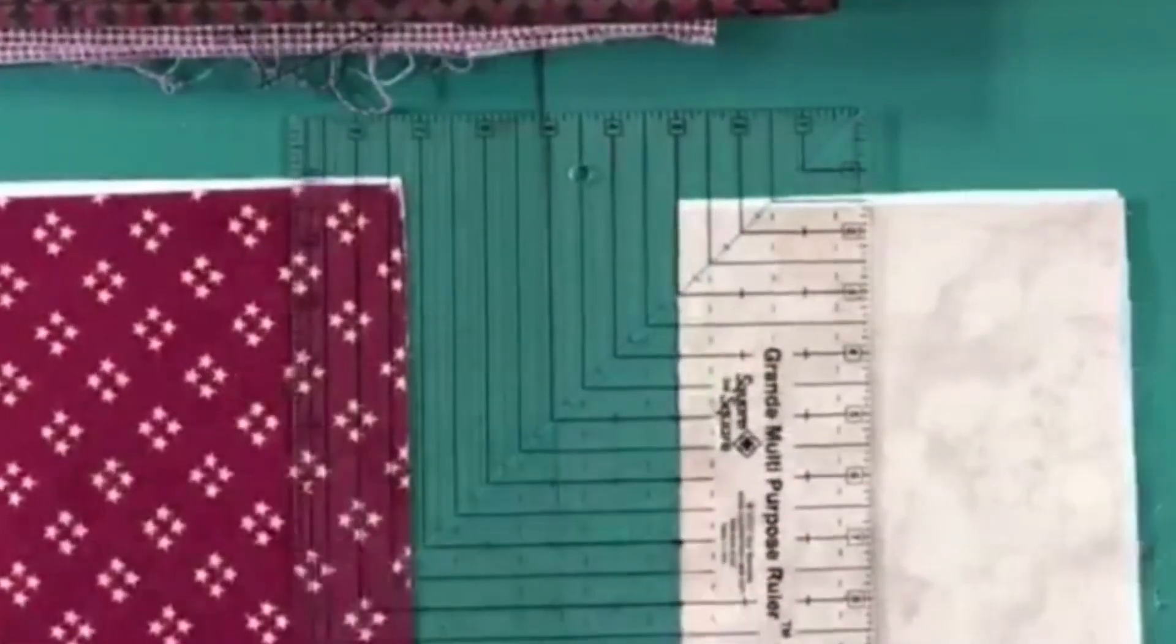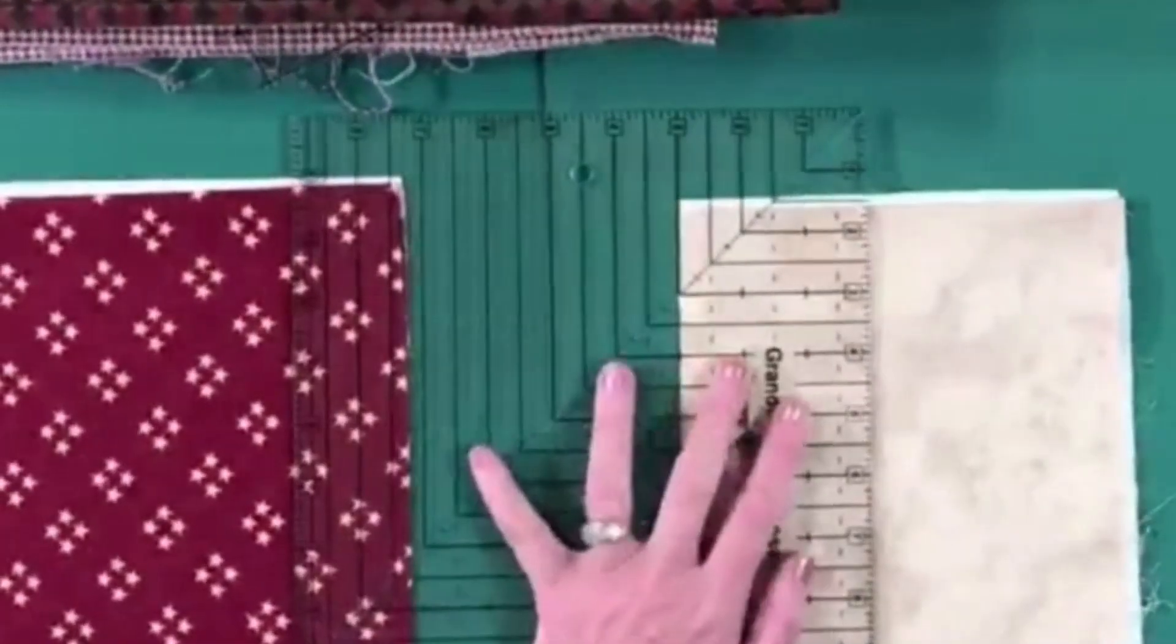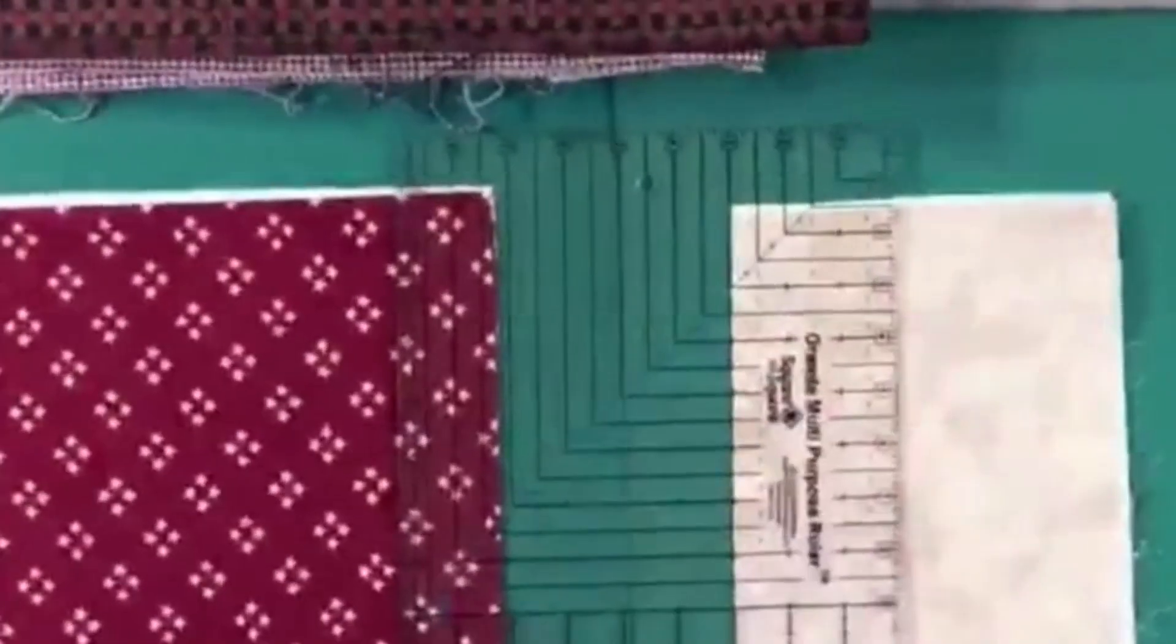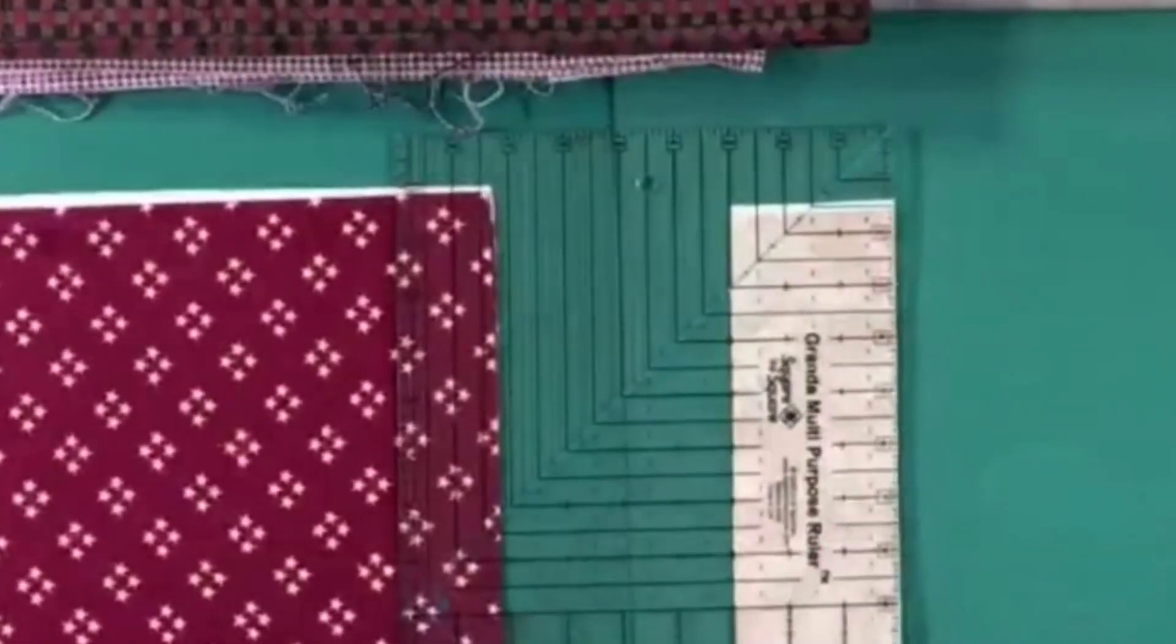I want my squares in the middle to be three inches. So I'm going to cut a three inch strip and I'm going to have my hand flat and I just make my cut. And you would continue on if you needed more, but one is all we're going to need for today.